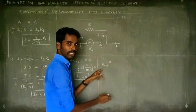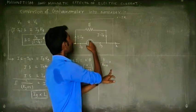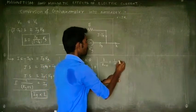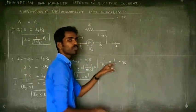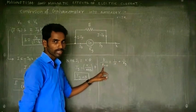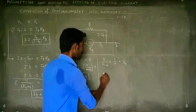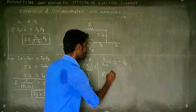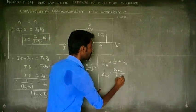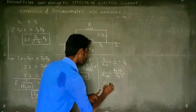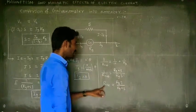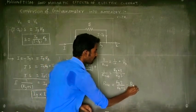For parallel combination, we take the reciprocal sum. So 1 over R_effective equals 1 over S plus 1 over RG. Adding these individual resistances reciprocally gives us 1 over R_effective equals (RG plus S) over (RG times S). Therefore, R_effective equals RG times S divided by (RG plus S). R_effective is the effective resistance of the ammeter.